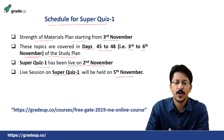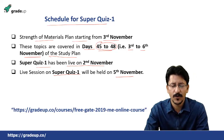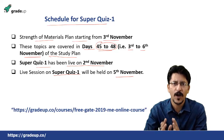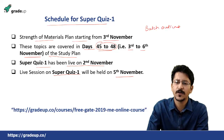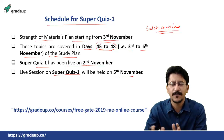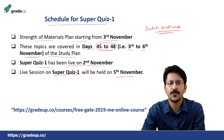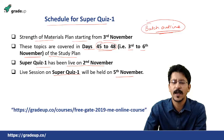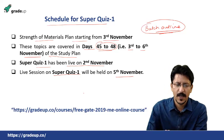If you specifically want these topics only, you can go to days 45 to 48 and study them. Also, it's not a hard and fast rule that you have to follow the study plan strictly. There is a section on the dashboard called the batch outline, from where you can go to any subject and read any topic you want, outside of the day-wise study plan, at your own convenience.